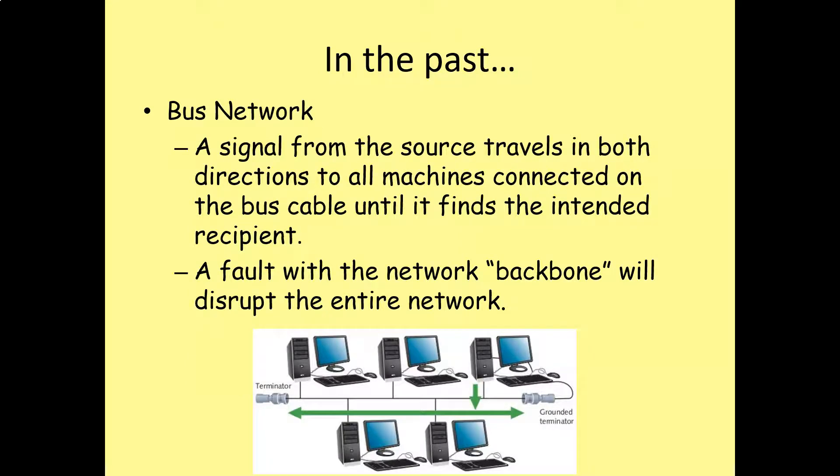Another topology that people might have used was a bus or a line network topology. A signal from the source travels in both directions to all the machines connected to the bus cable until it finds the intended recipient. A fault with the network backbone will disrupt the entire network.